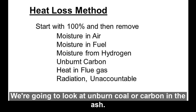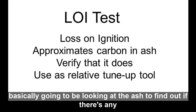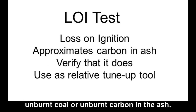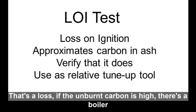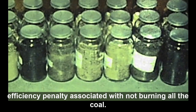We're going to look at unburnt coal, or carbon in the ash — sometimes called LOI, which stands for loss on ignition. We look at the ash to find out if there's any unburnt carbon. That's a loss: if unburnt carbon is high, there's a boiler efficiency penalty associated with not burning all the coal.